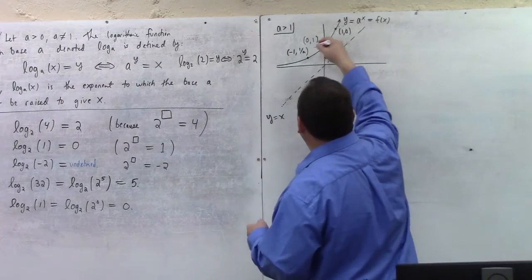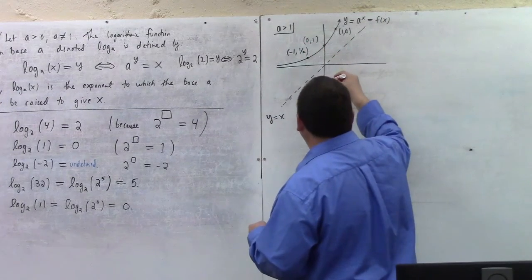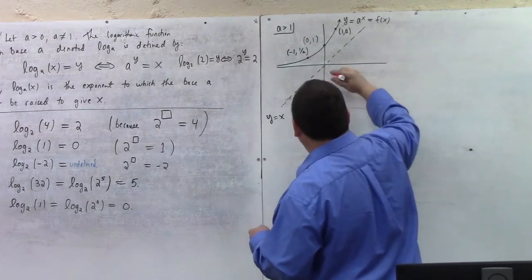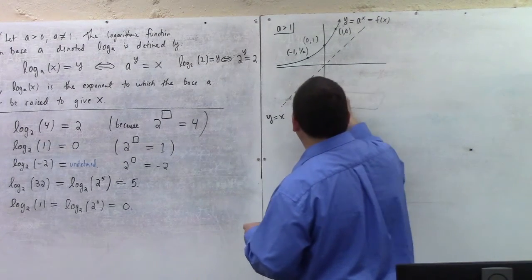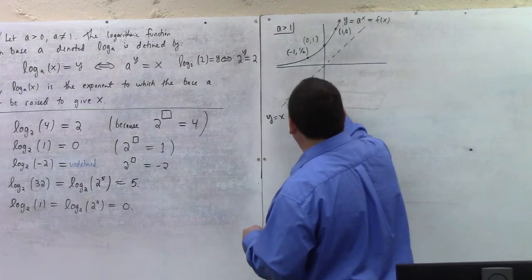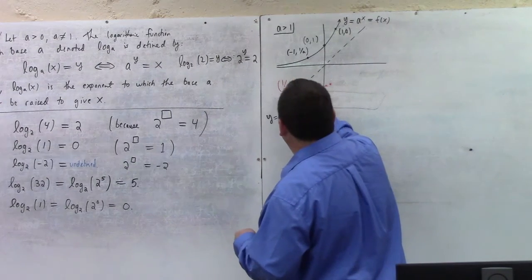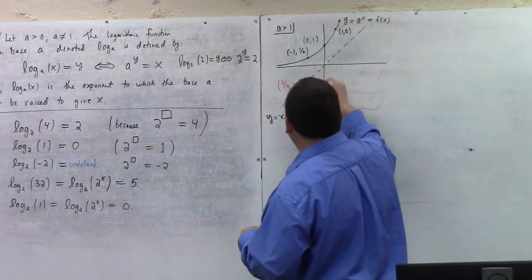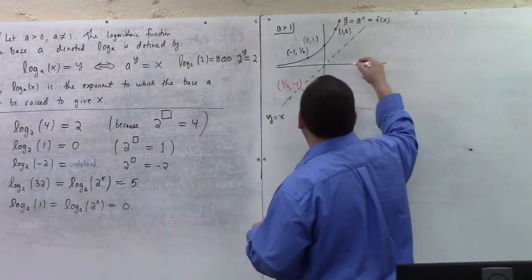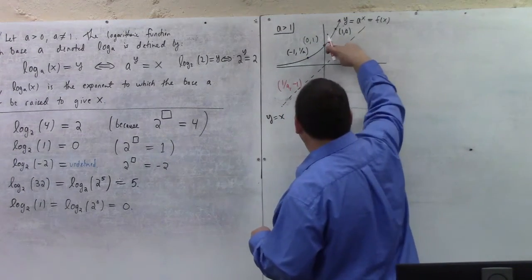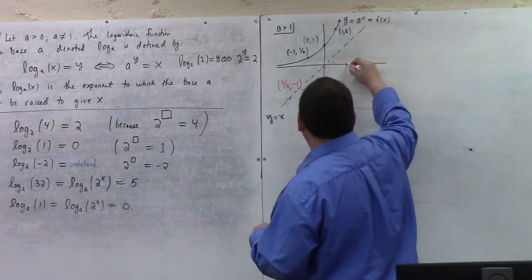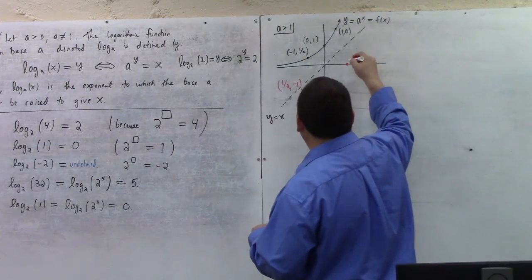So the point 1 over A minus 1 should flip to this point down here. This point would be 1 over A minus 1. And the point 0, 1 flips to the point 1, 0.